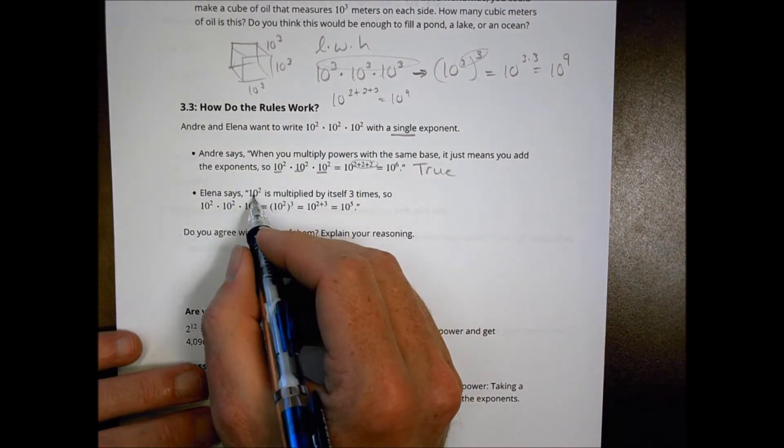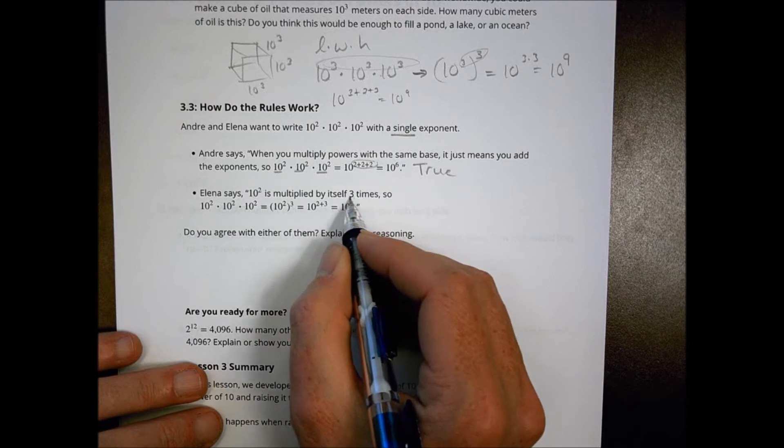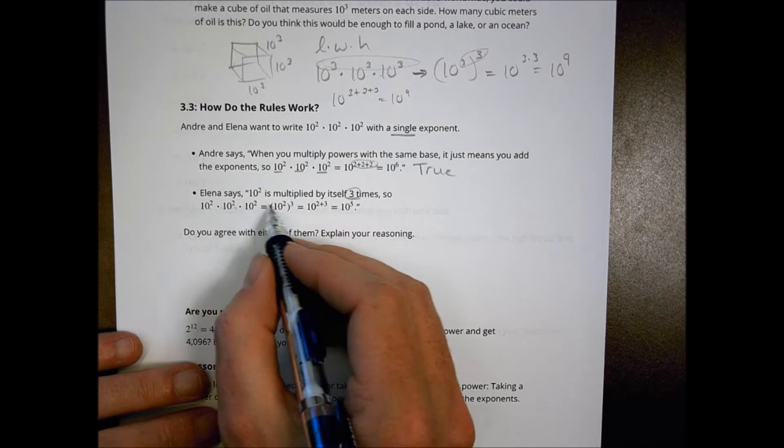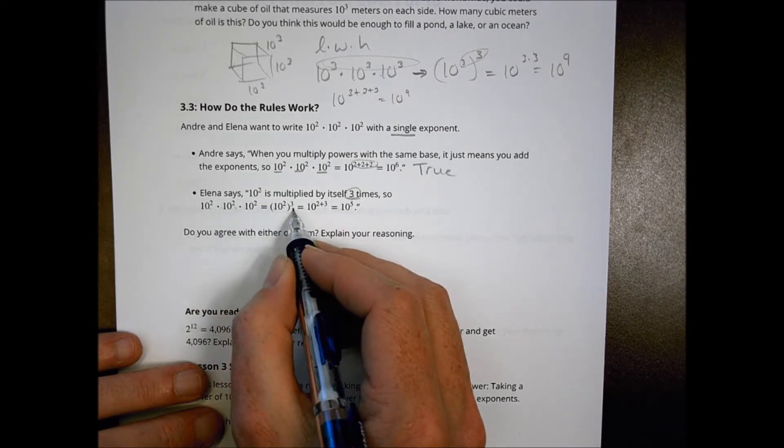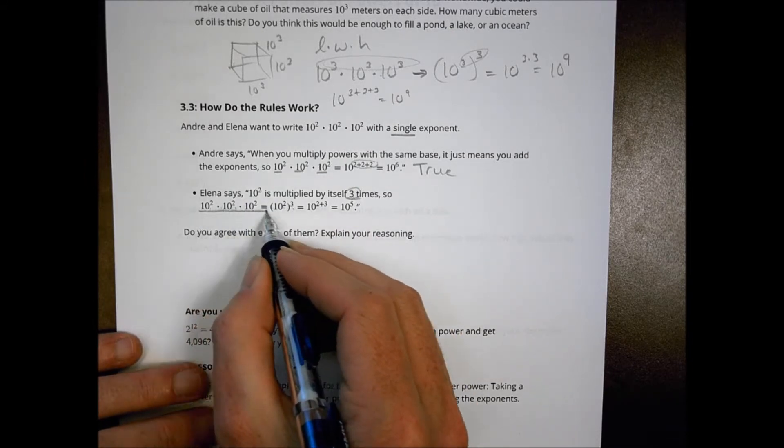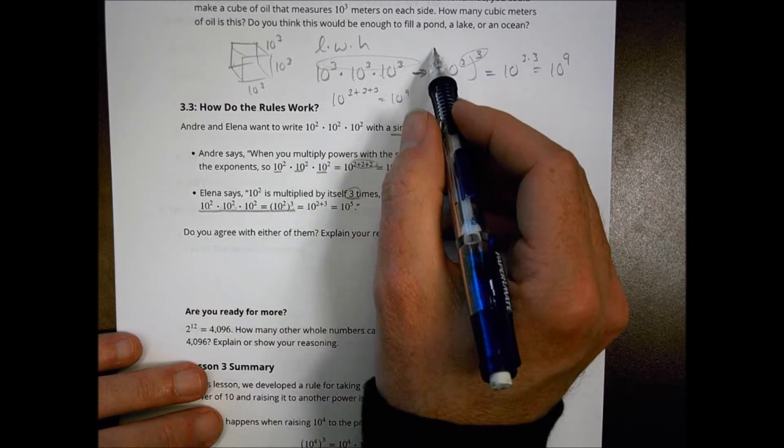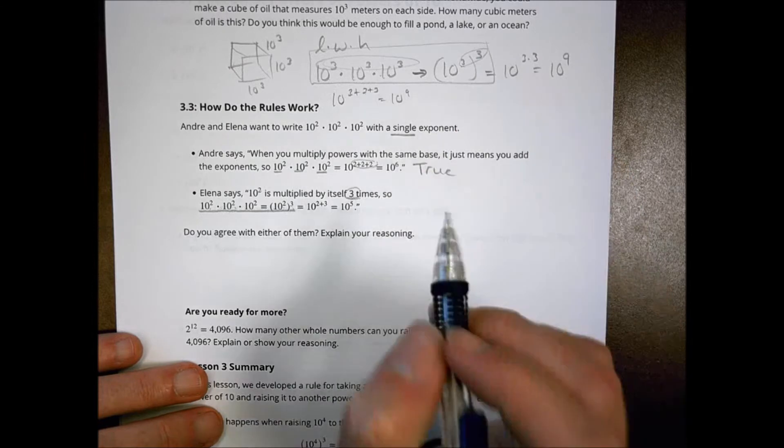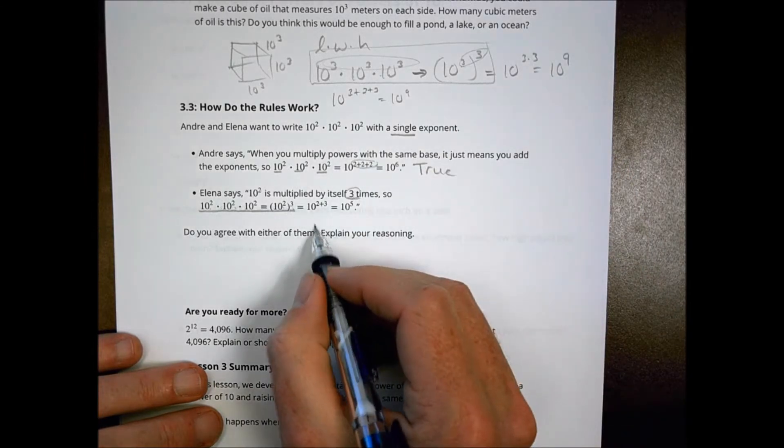Elena says 10 squared is multiplied by itself three times. So it's 10 squared times 10 squared times 10 squared equals 10 squared to the third power. This part right here, I totally agree with. That matches what we did right there. This is like 10 to the third, and we did it three times. Totally matches.